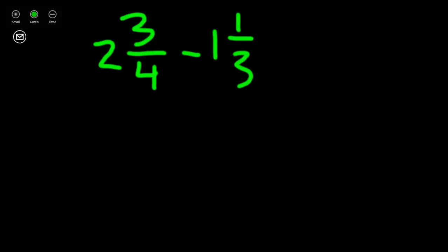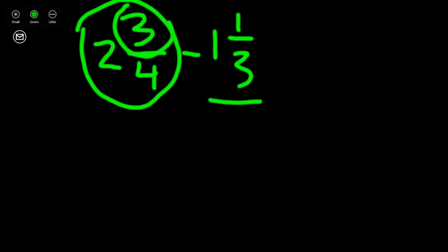The first thing we need to check is that our largest mixed number or fraction is first, because we know we subtract the smaller number from the larger number, so our larger number has to be first, two and three-fourths. Also, we check that our larger numerator is also first. Three is larger than one, so now we can go ahead and subtract.